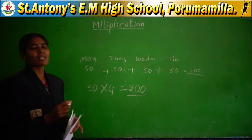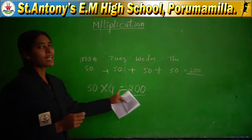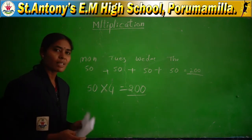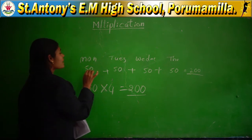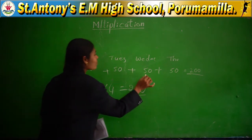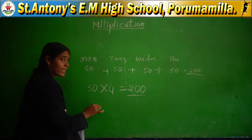Which is the easiest method? Multiplication is the easiest method. Repeated addition is also called multiplication.